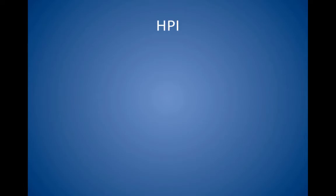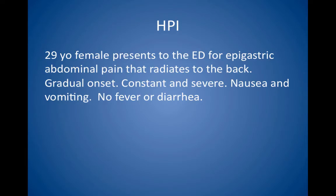History of the present illness. A 29-year-old female presents to the emergency department for epigastric abdominal pain that radiates to the back. It was gradual in onset, but has been constant and severe for eight hours. She has had nausea and vomiting, but denies fevers or diarrhea.